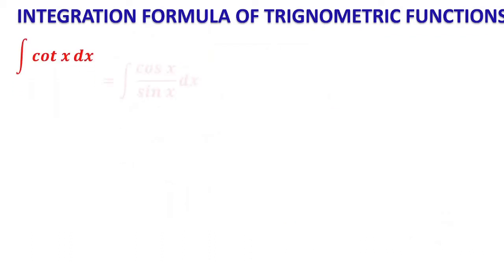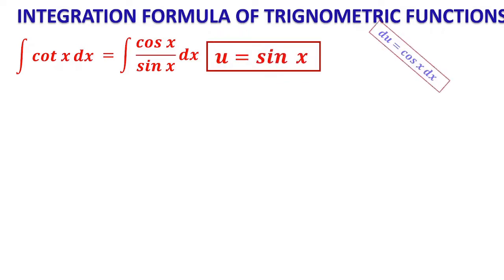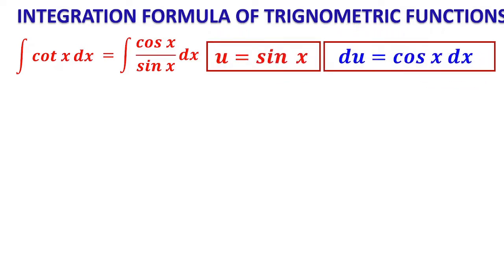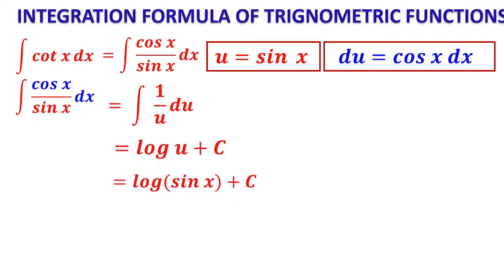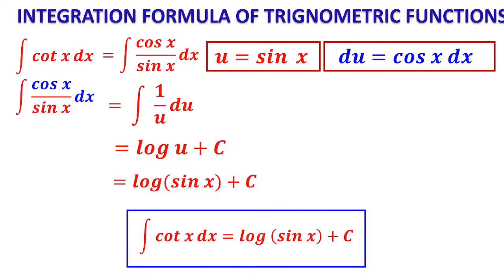Similarly, for ∫cot x dx, we write cot x = cos x / sin x. The differentiation of sin x is cos x dx, which is directly available in the numerator. We substitute u = sin x, so du = cos x dx. Replacing cos x dx by du and sin x by u gives ∫(du/u) = log|u| + C. Therefore, ∫cot x dx = log|sin x| + C.